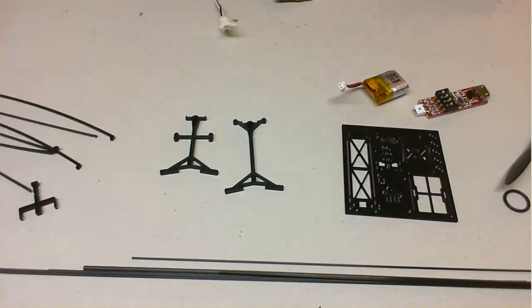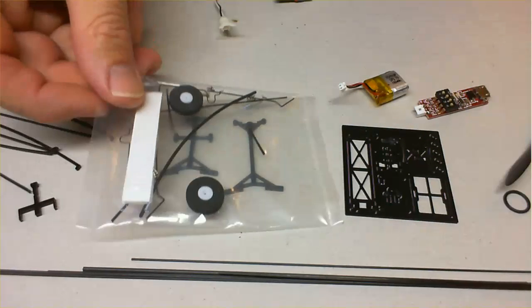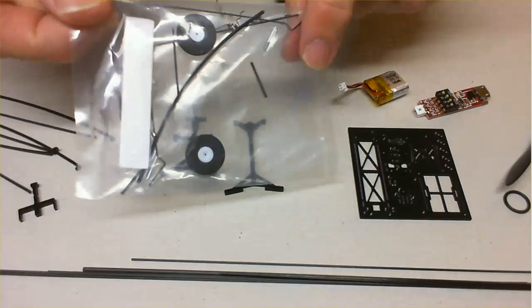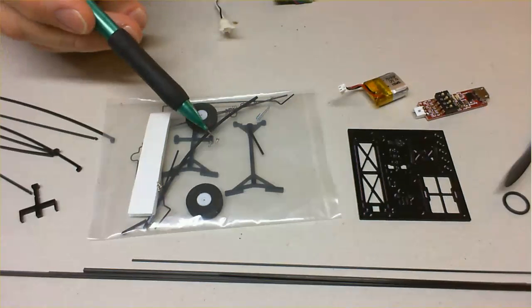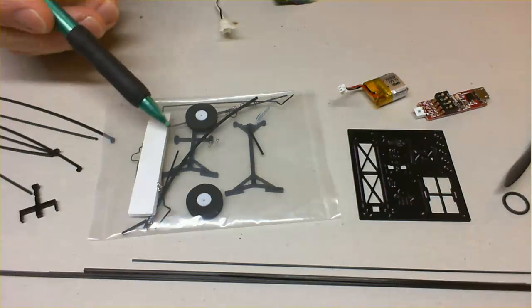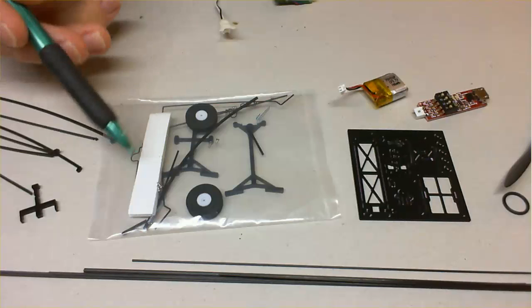Okay, so they're the main parts. Also, just look at the bag here. I won't open it up, but we've got a number of things in here. We've got the screws, the wheels, and the undercarriage.